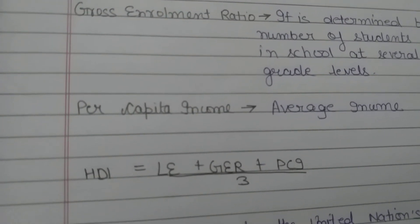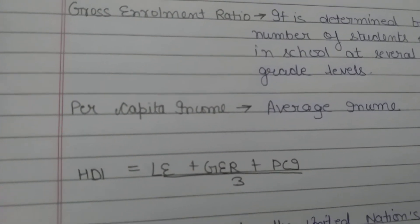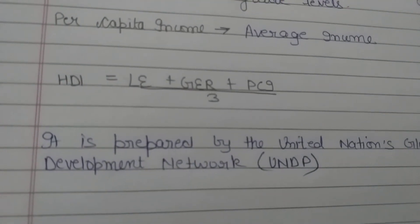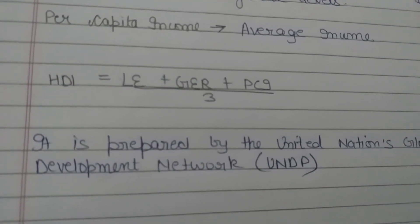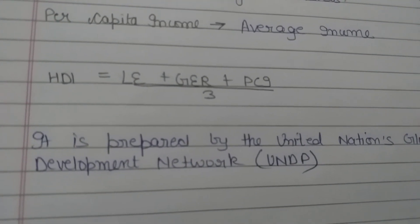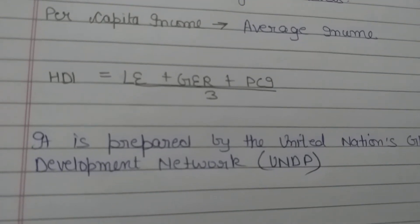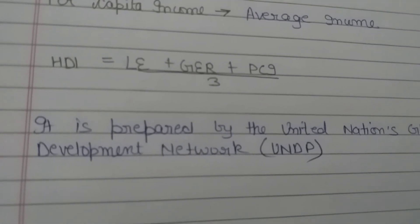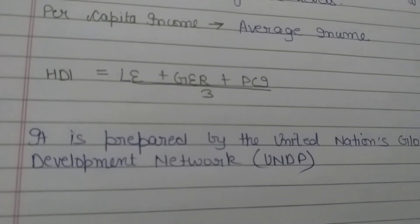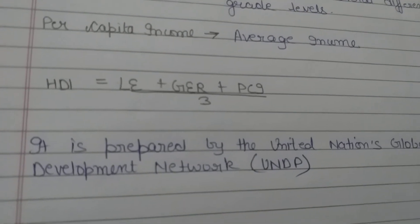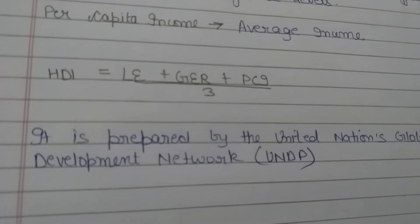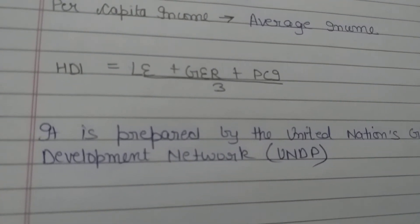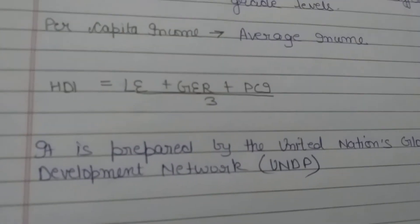We add these three indicators and divide by three to get the HDI, and countries are ranked accordingly. HDI is prepared by UNDP — United Nations Development Programme.